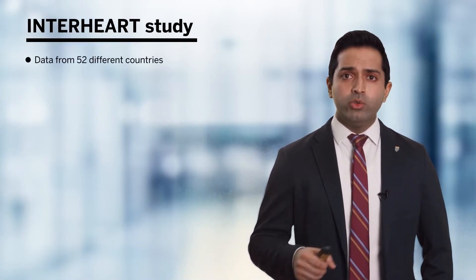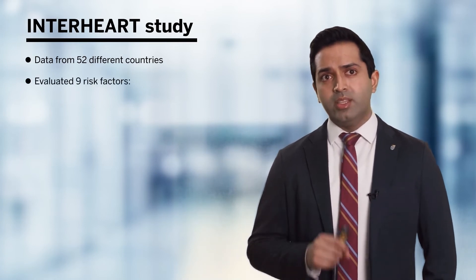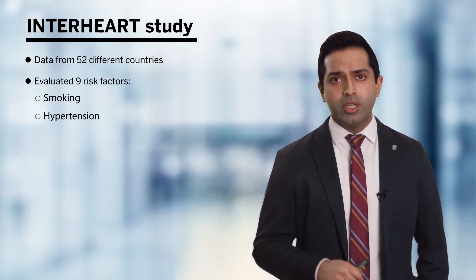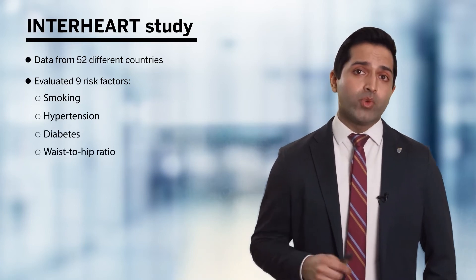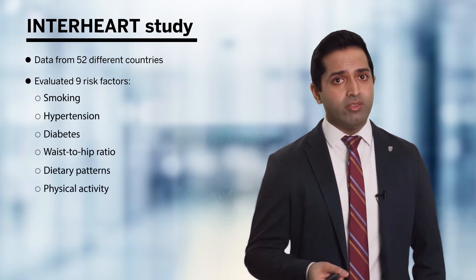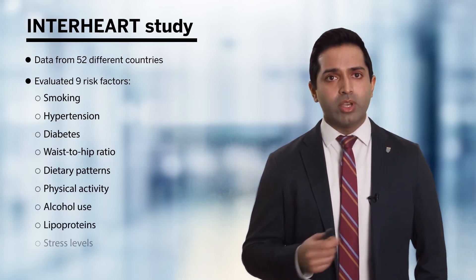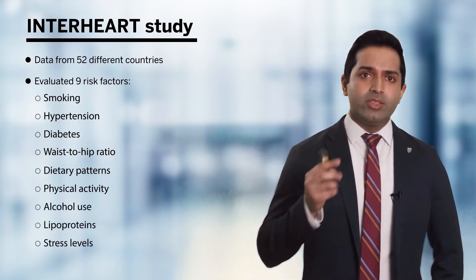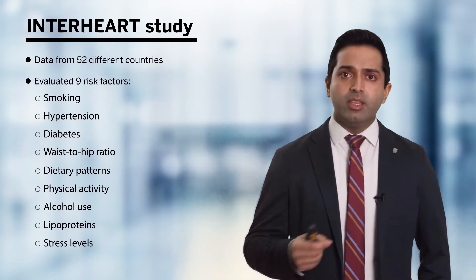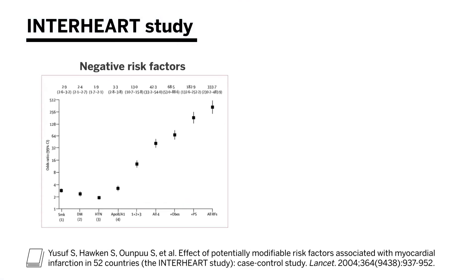In fact, in the InterHeart study, they looked at 52 different countries across the world and evaluated nine risk factors: smoking, hypertension, diabetes, waist-to-hip ratio, dietary patterns, physical activity, alcohol use, lipoproteins, and stress levels. They found that summing risk factors had a greater effect than individual risk factors alone. Individual negative risk factors may be associated with up to a two-fold risk of coronary disease, but when multiple risk factors combine, that odds ratio increases dramatically to upwards of 200-fold risk.